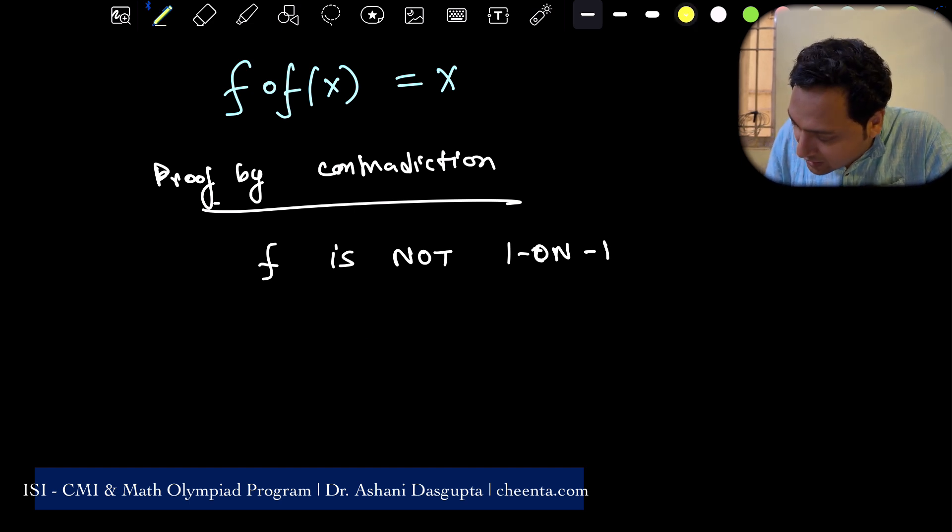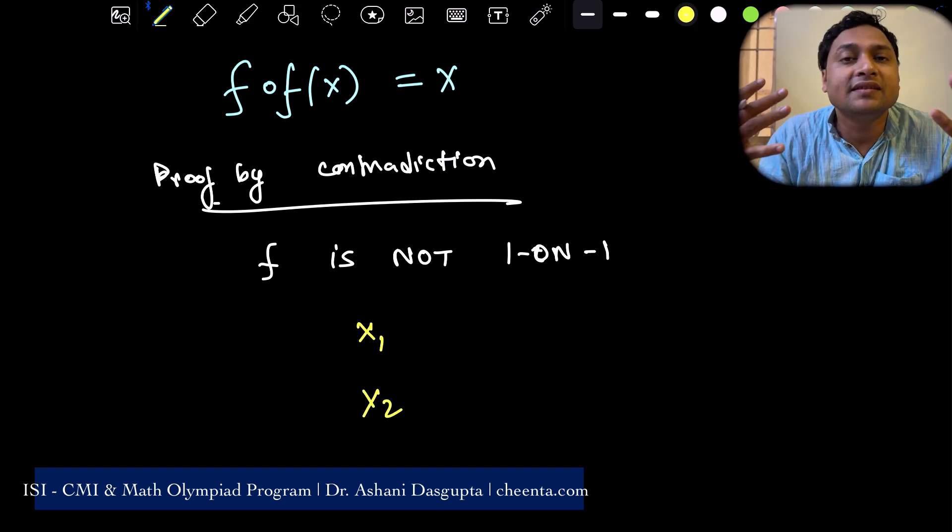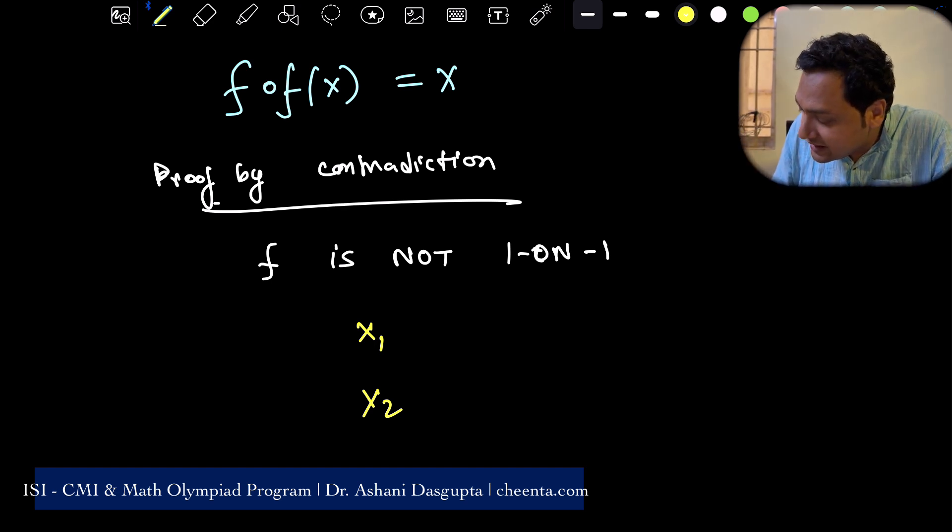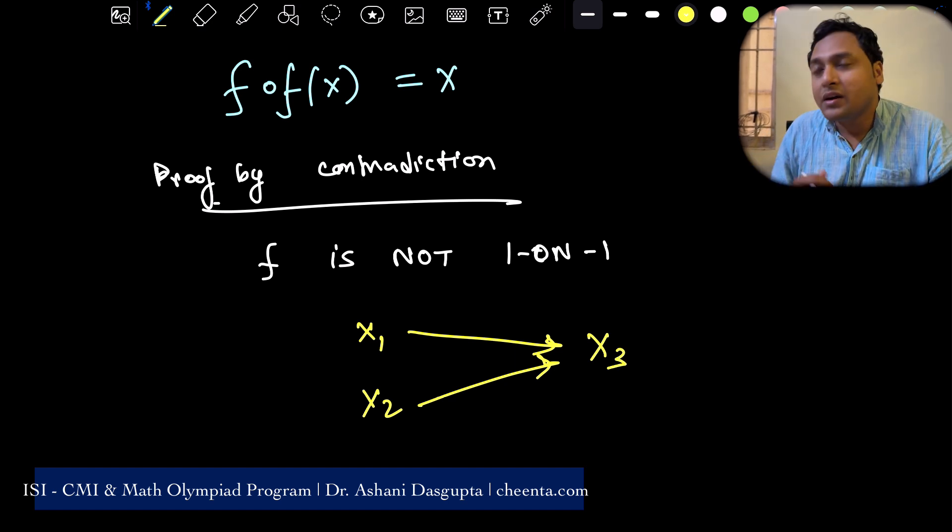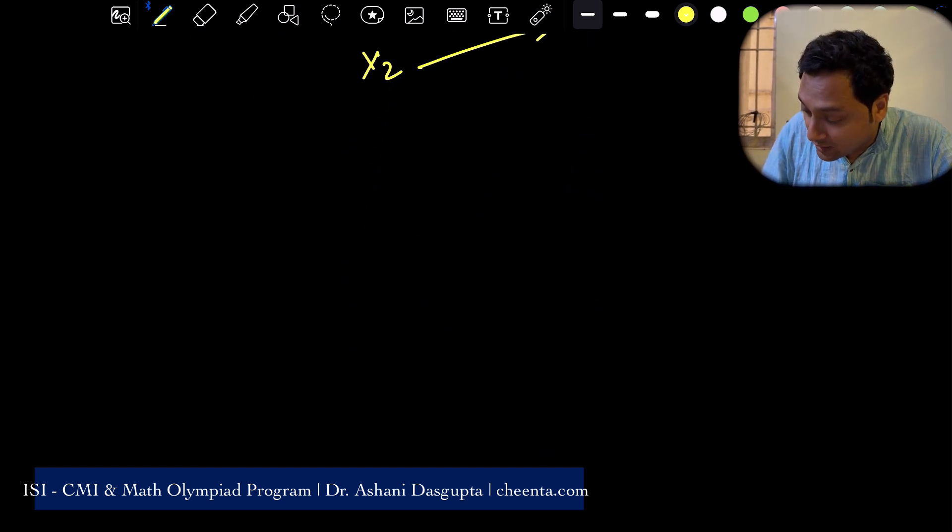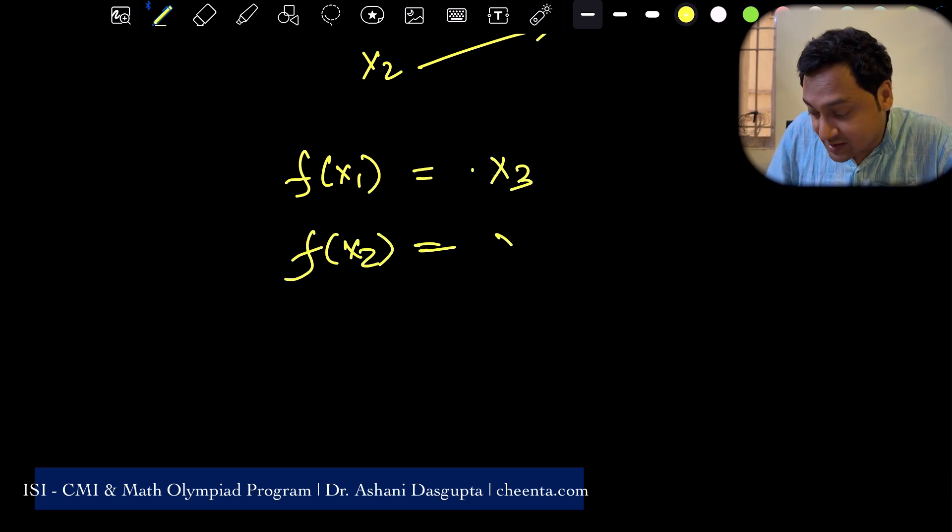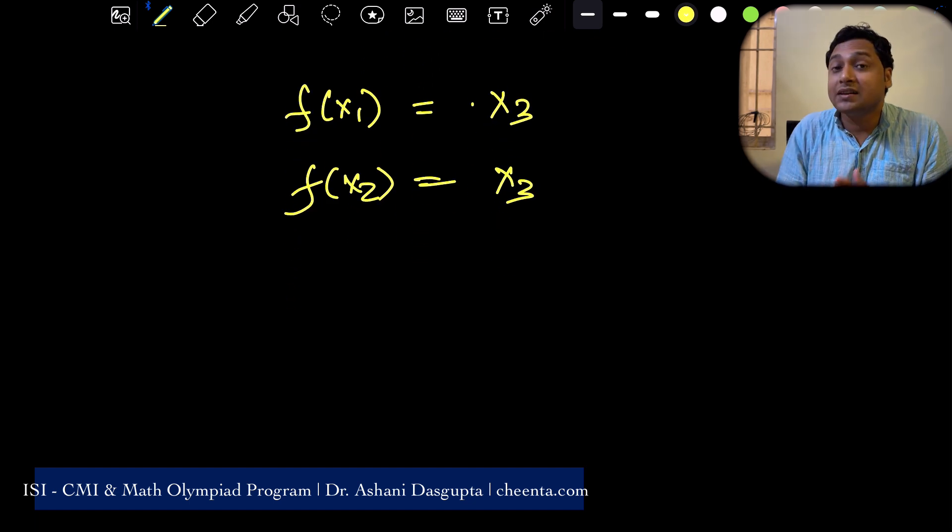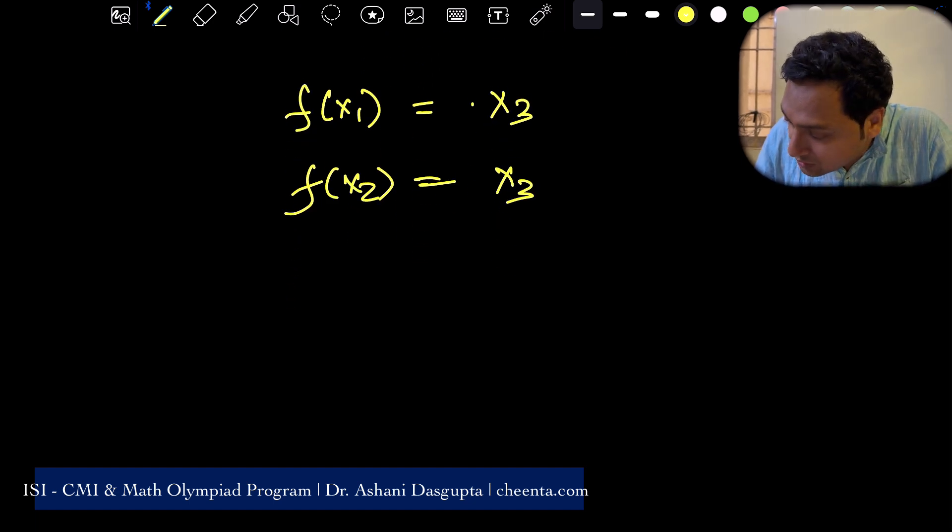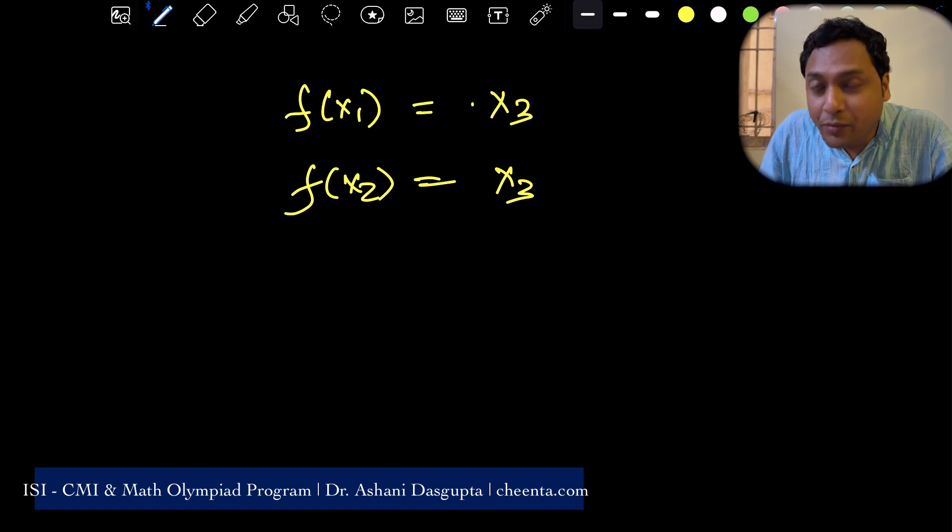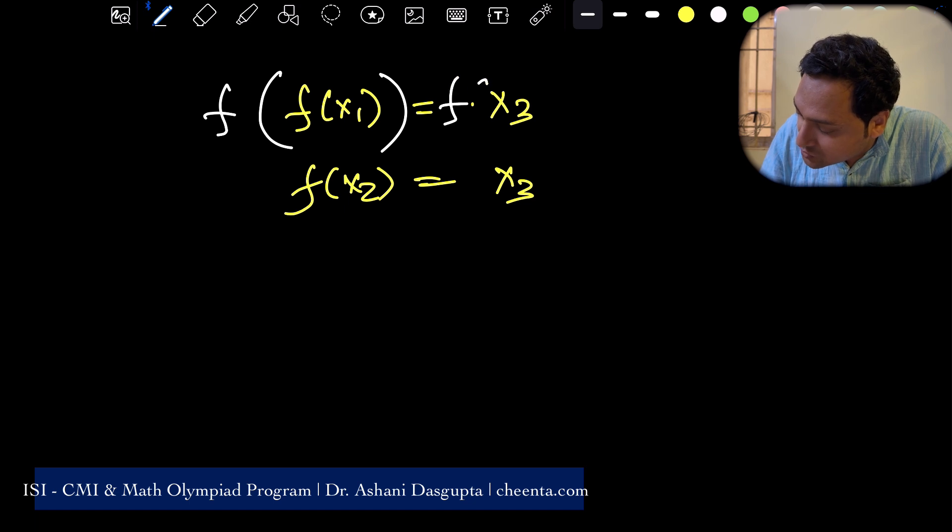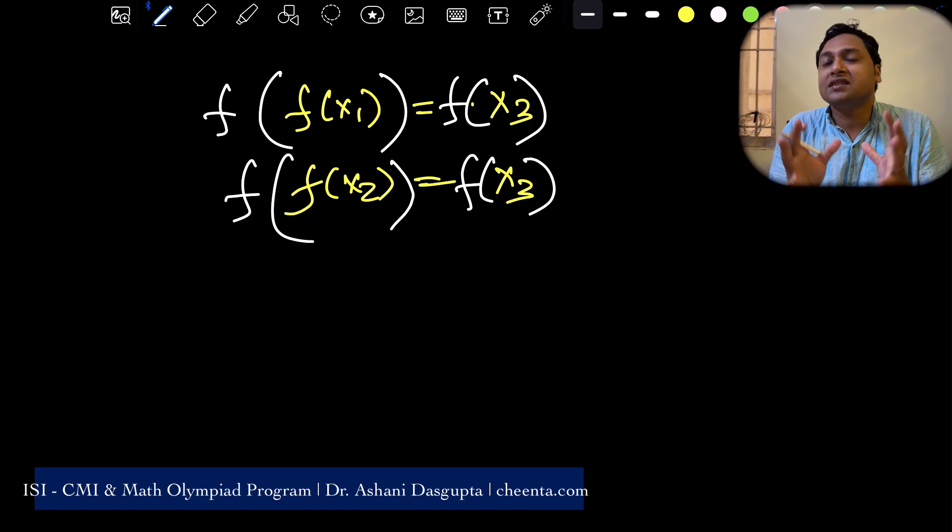Let x1 and x2 be two different elements of the domain. And suppose they are mapped to the same element x3 in the co-domain. So that means f of x1 is equal to x3, f of x2 is also equals to x3. This is what will happen if the function is not one to one. Now let's do one thing. Let us compose f with f. So f of f of x1 is equal to f of x3. f of f of x2 is equal to f of x3. I just composed f with f.